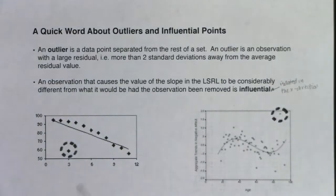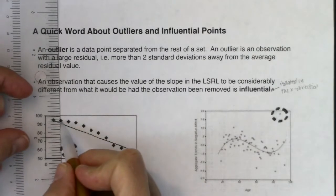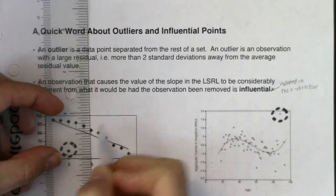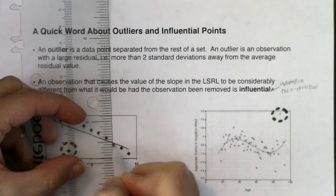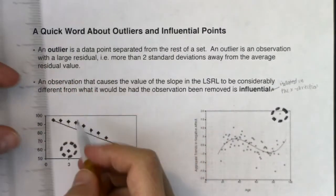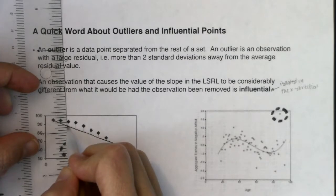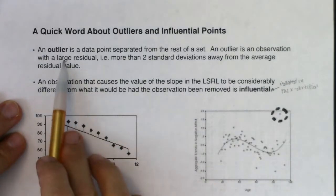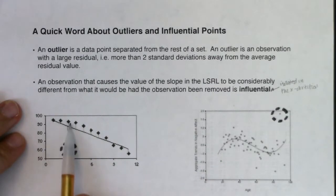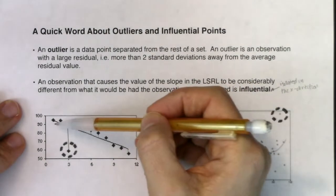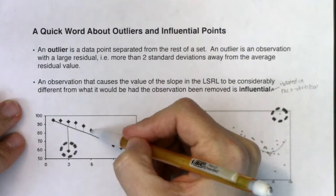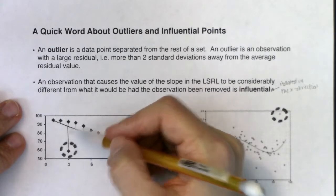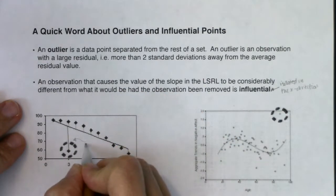Outliers have large residual values. Residuals are always the vertical drop from your observed data value to the LSRL. If we graph the residuals and look at the circled point, compare its residual to all the others — you can get a feel for the average length. This one looks more than double that average. It's a relatively large residual, and that's how we graphically identify it as an outlier.